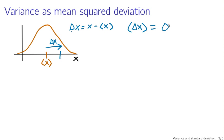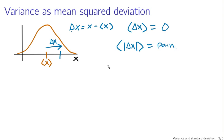Sometimes delta x is positive, sometimes negative, and they end up canceling out. You might then try the absolute value of delta x, but absolute values are difficult to work with since you have to keep track of signs. So what statisticians and physicists do instead is square it. You calculate the expected value of the squared deviation — the mean squared deviation. This has a name in statistics: it's written as sigma squared, and it's called the variance.